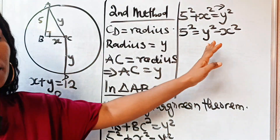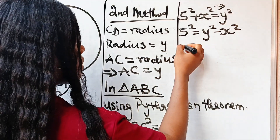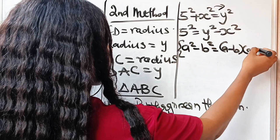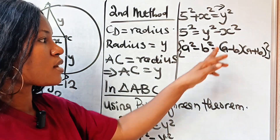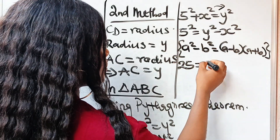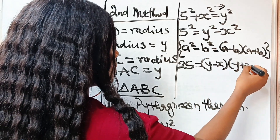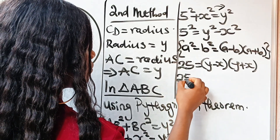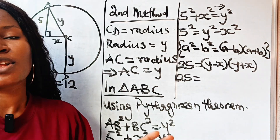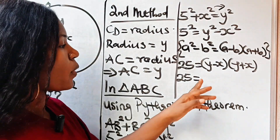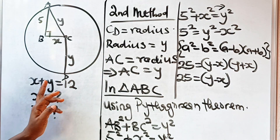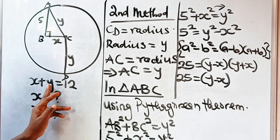Now, using the difference of two squares — a squared minus b squared equals (a minus b)(a plus b) — we apply that here. So 25 equals (y minus x)(y plus x). Please see the subscribe button and turn on your notification bell if this is your first time here. Give us a thumbs up if you love what we are doing. Now, we have (y minus x) and y plus x is already given as 12. Remember that addition is commutative, so y plus x and x plus y give the same result.